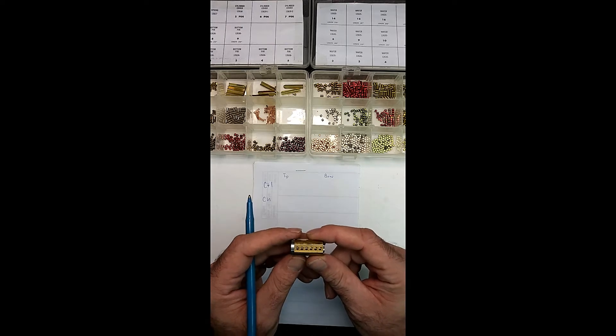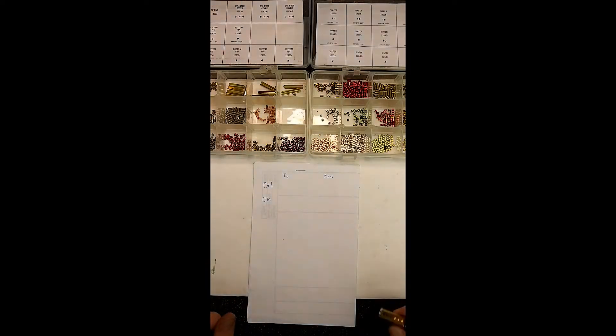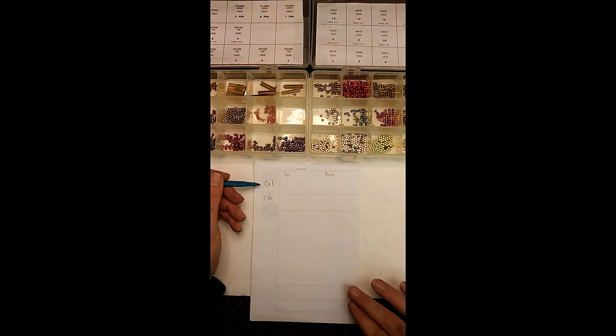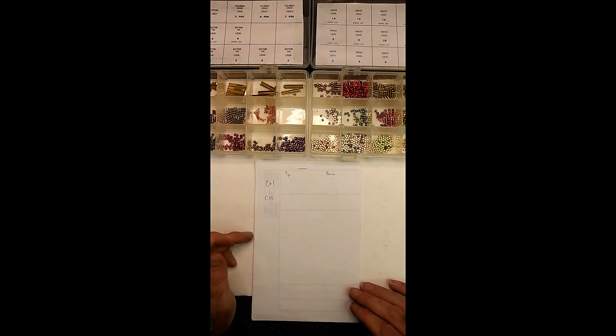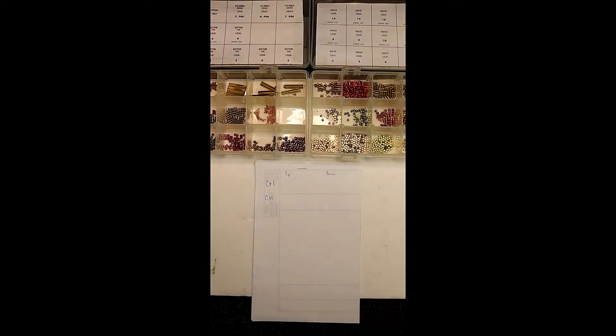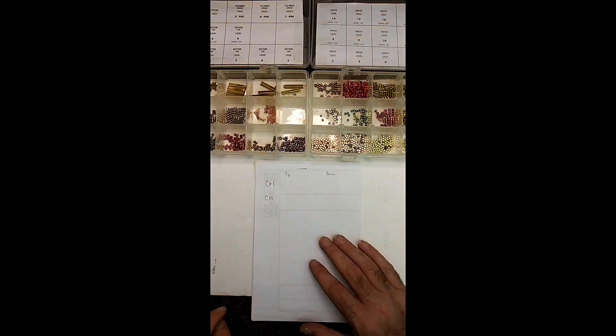So first things first, we've got to figure out our key numbers. Whenever you're laying out key numbers, you always want to have your control key listed up top, and then any grandmasters, masters, submasters, and then the change keys. In this case, this job specifically just calls for a control key and then just an operating key. So it's very simple.